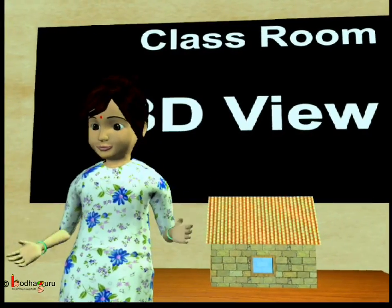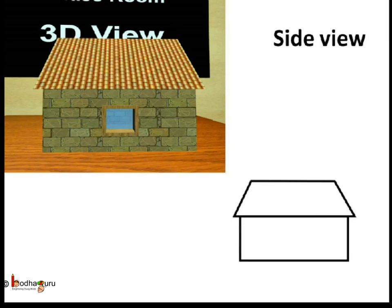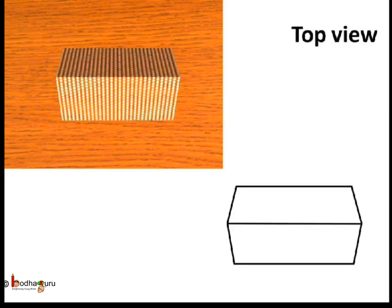This picture shows the front side of the house. If we look at the house from this side, it looks like this picture — this is the side view of the house. If someone climbs a tree and looks down, the house would look like this. So this is the top view of the house.